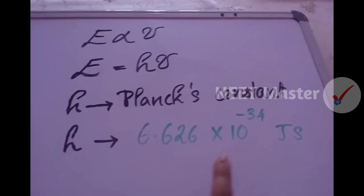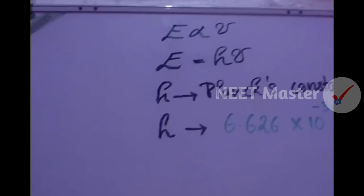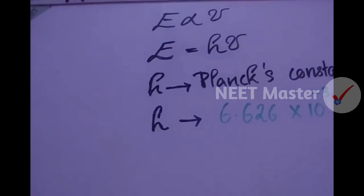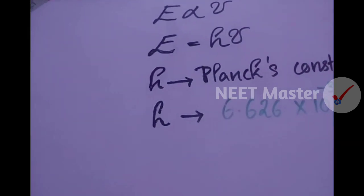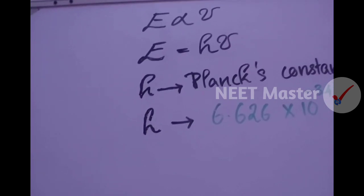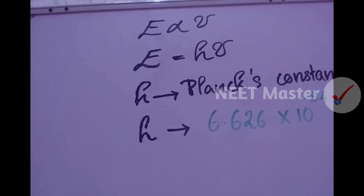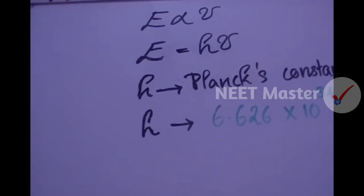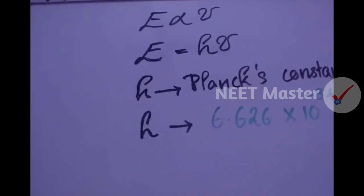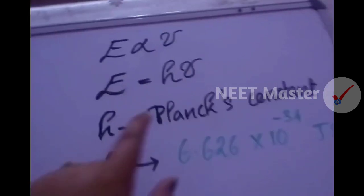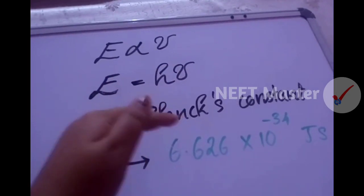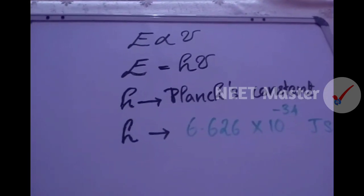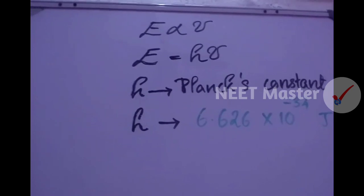Black body radiation explains the distribution of intensity in the radiation from a black body as a function of frequency or wavelength at different temperatures. The frequency and wavelength are related by c = frequency times wavelength. Let's take a look at black body radiation in detail.